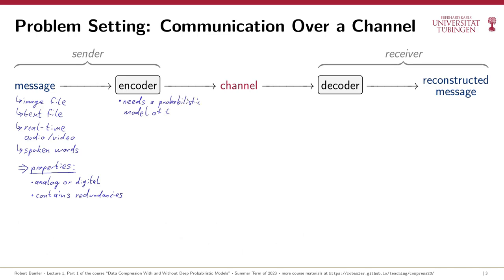The distinction between genuine and redundant information really depends on the type of message you want to communicate. For example, in the Albanian language, the letter Q does not need to be followed by a letter U. Therefore, if you want to encode some Albanian text, any U that does follow a Q carries genuine information and is not redundant, so the encoder must not remove it. More generally, if you want to detect redundancies, you need to know what kind of message you're dealing with so you can build a probabilistic model of common patterns. It's in this probabilistic modeling where there's been a lot of recent progress, because we can now use machine learning models inside a compression algorithm.